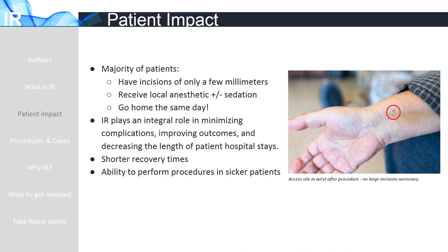How do IR procedures benefit patients? The majority of procedures require small incisions, only a few millimeters in length. In contrast to traditionally larger incisions made in surgical procedures, infection and bleeding risks are minimized. Local anesthetic and mild sedation also prevent complications of general anesthesia. With these benefits, IR is able to minimize complications, improve patient outcomes, and decrease length of patient hospital stays. Furthermore, sicker patients who cannot tolerate traditional surgeries can safely undergo IR procedures.